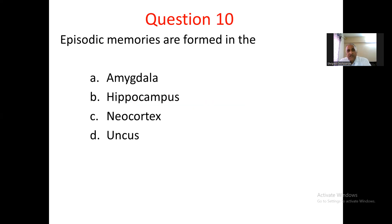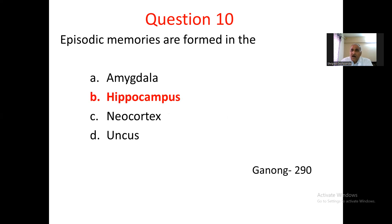Question number 10. Episodic memories are formed in: A. Amygdala, B. Hippocampus, C. Neocortex, D. Uncus. The episodic memories are formed in the hippocampus. Hence the answer is B. Hippocampus. Refer to Ganong page 290.